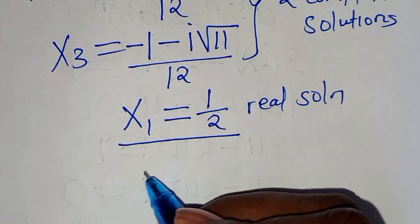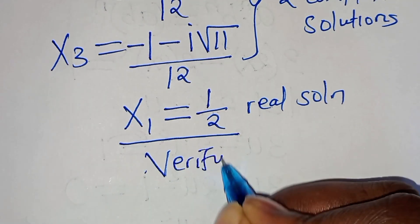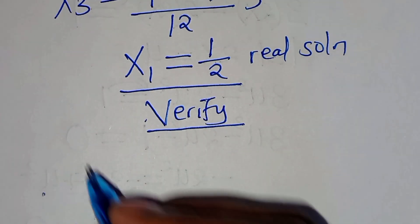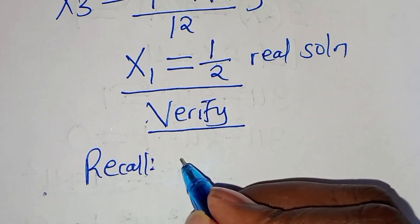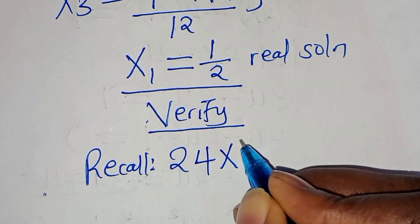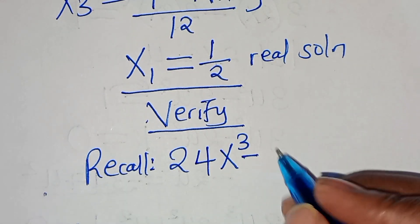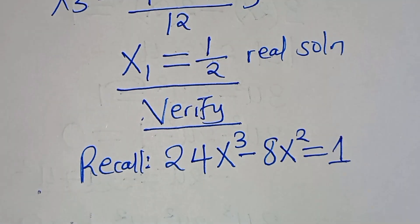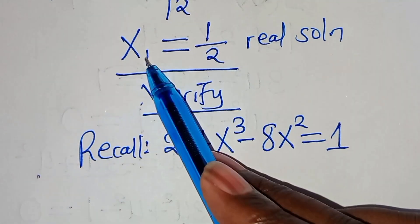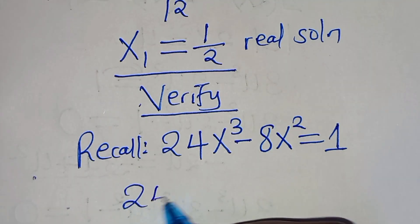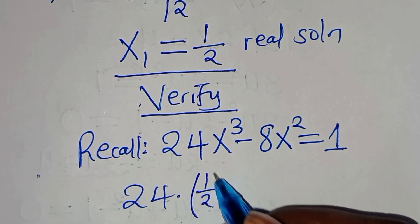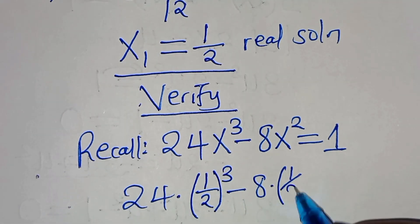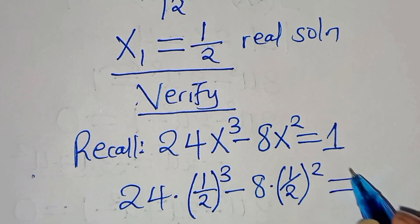So, the next step from here is to verify. Let's verify that x₁, which is 1/2, satisfies the equation. So, if you recall, we have that 24x to the power of 3 subtract 8x to the power of 2, this is supposed to give us a value of 1. Let's substitute the value of x here, which is 1/2, so that we have 24 times (1/2) raised to the power of 3, then minus 8 times (1/2) raised to the power of 2. This should give us a value of 1. So, now we have 24 times 1 over 2³ which is 8, then minus 8 times 1 over 2² which is 4.